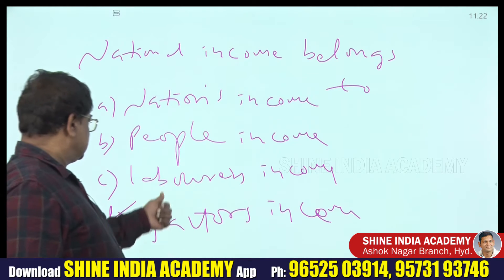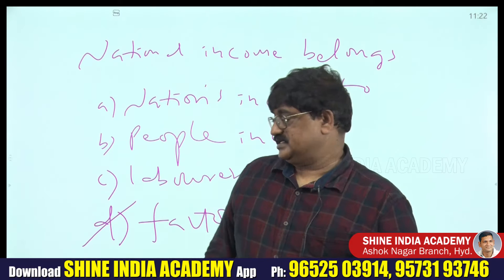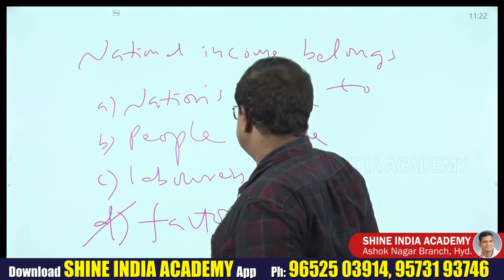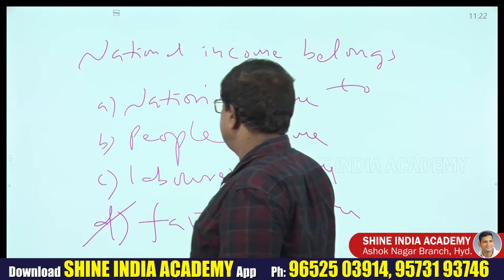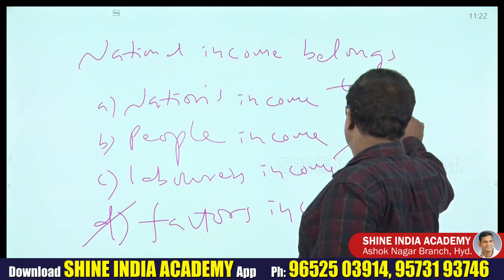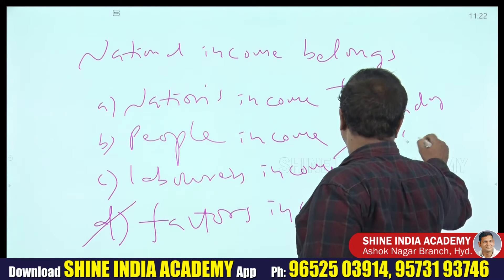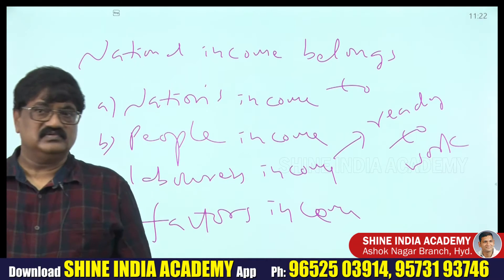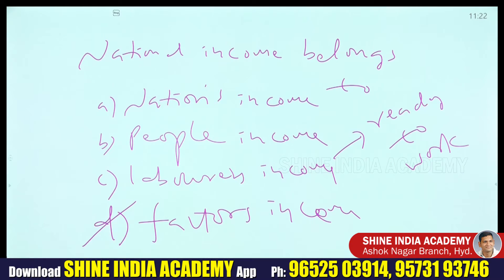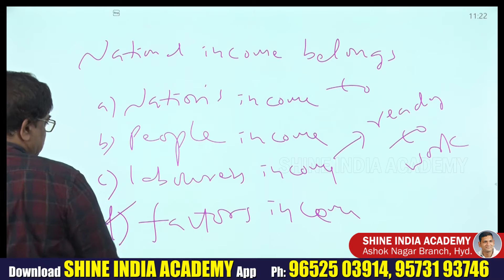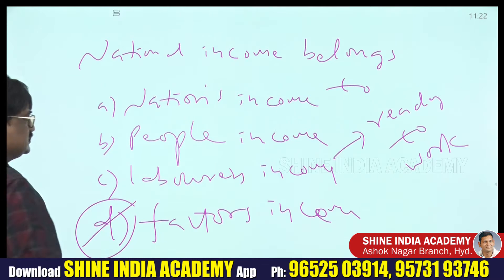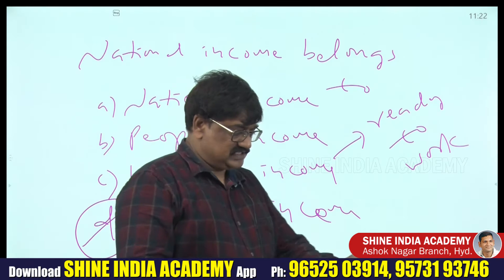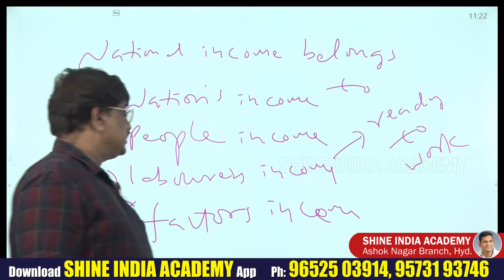The word 'laborers' is not correct because laborers are people who are ready to work, while persons already working are treated as workers. That is why laborers is incorrect and the right answer is factors. National income belongs to factors.